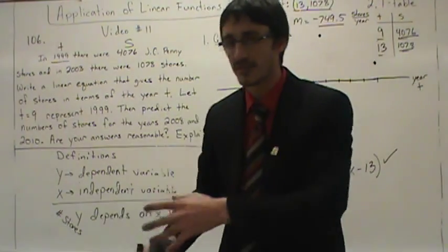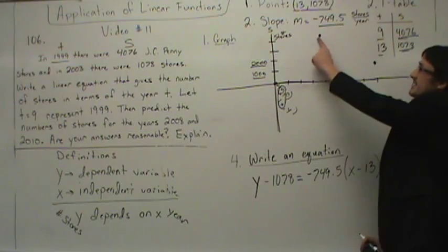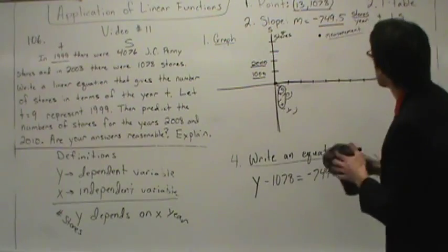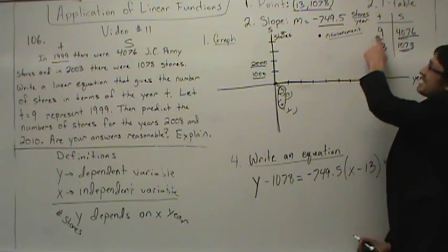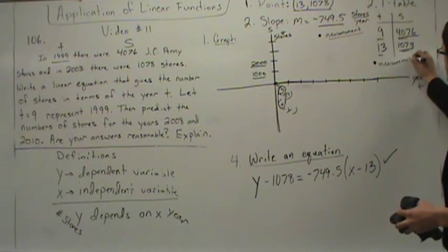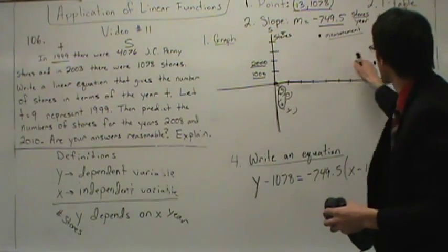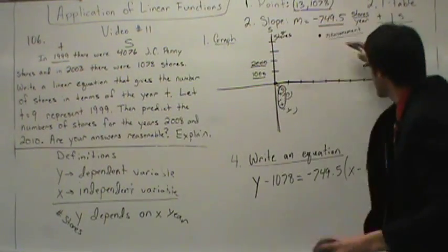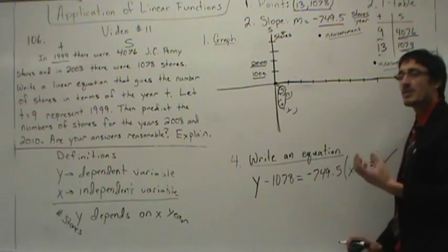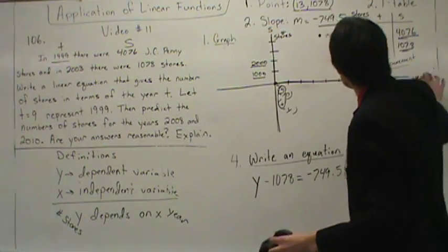What we do in math class is a little different from what we do out there. These are measurements. In 1999 there were 4,076 stores — that's a measurement. And in 2003 there were 1,078 stores — that's another measurement. To form a line, you would have to have infinitely many measurements, and it's not possible for us to measure forever. So measurements are always going to be restricted in number.